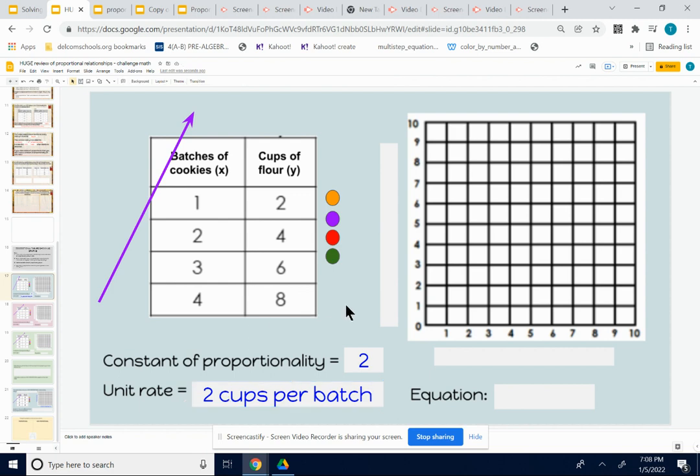Now I also want you to know what it looks like on the graph. So if I graphed this, you know what I want to do first. I want to label the x-axis and the y-axis. My x-axis is batches of flour. So I'm going to put in this text box on my x-axis, batches of cookies, which is x. And on my y-axis, I'm going to type in cups of flour, which is y.